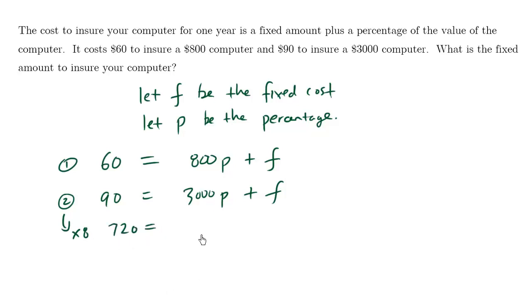So 720 equals 24,000P plus 8F. For me to go from 800 to 24,000, 24,000 divided by 800, I need to multiply by 30.